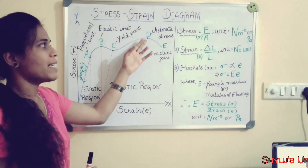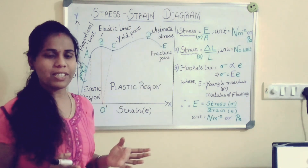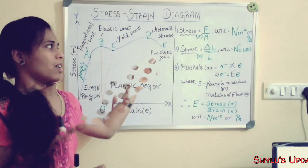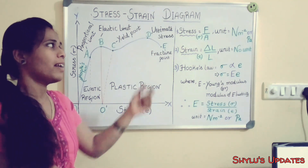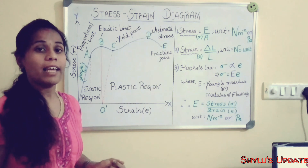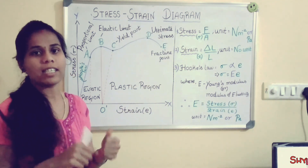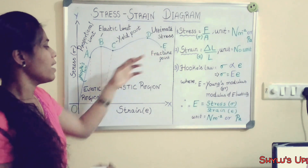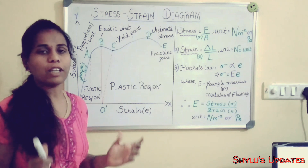The point D is very important — it represents the ultimate stress. Ultimate stress is the maximum stress a body can bear before the fracture point. Before failure, a maximum elongation occurs at ultimate stress. The fracture point means that even a little or mild stress causes the material to fracture, break, or fail. Points B, C, D, and E together form the plastic region, where the material does not regain its original shape.